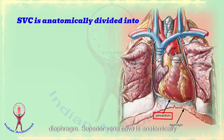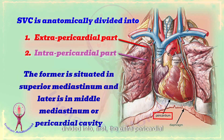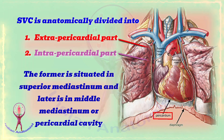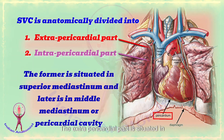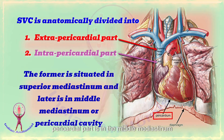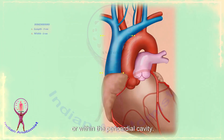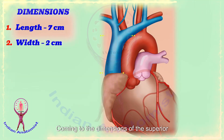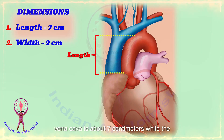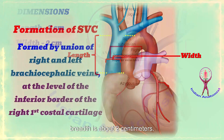The superior vena cava is anatomically divided into two parts: first, the extrapericardial part, and second, the intrapericardial part. The extrapericardial part is situated in the superior mediastinum and the intrapericardial part is in the middle mediastinum or within the pericardial cavity. The length of the superior vena cava is about 7 cm while the breadth is about 2 cm.